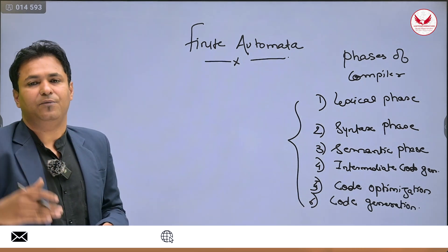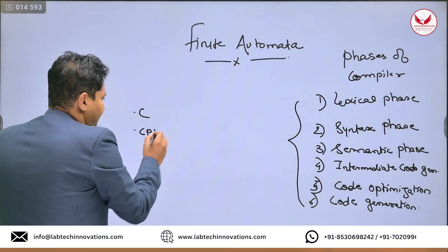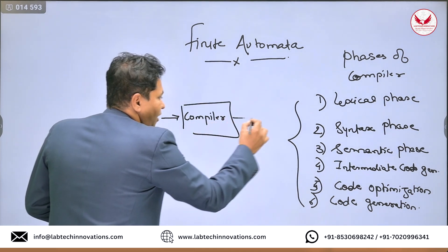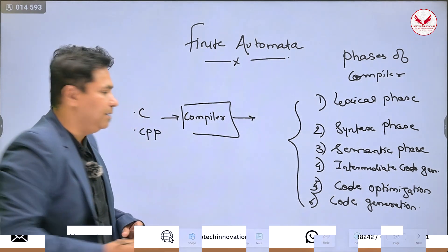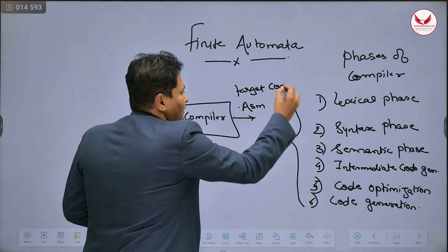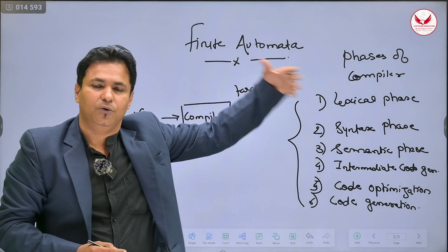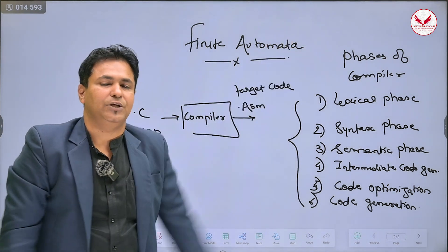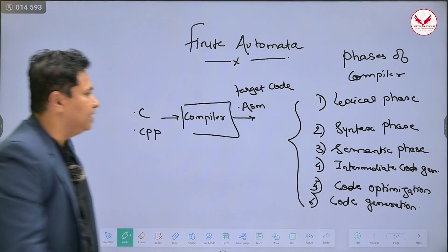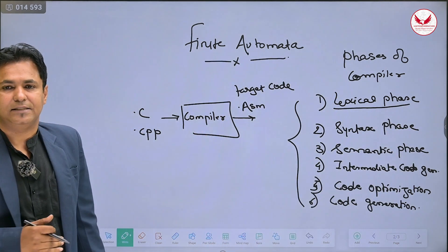A simple source language, say C or C++, requires a compiler to compile. The output of the compiler is in assembly language — that is the target code. This target code is passed to the assembler, then afterwards the loader, linker, and it will execute in the main memory. Finite automata is mainly used for the first phase of the compiler, that is the lexical phase.